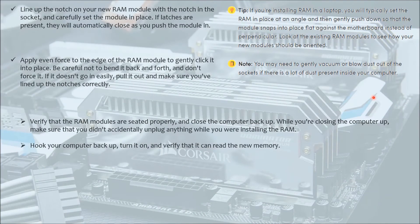Line up the notch on your new RAM module with the notch in the socket and carefully set the module in place. If latches are present, they will automatically close when you push the module in. Apply even force on the edges of the RAM module to gently click it into place. Be careful not to bend it. If it doesn't go in easily, pull it out and make sure it is correctly aligned. Verify the RAM module is seated properly, then close the computer back up, making sure you didn't accidentally unplug anything.